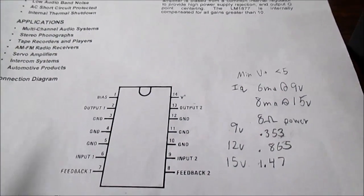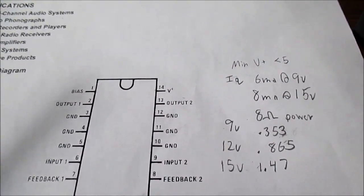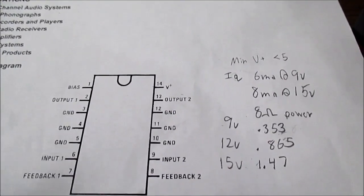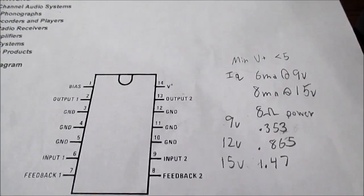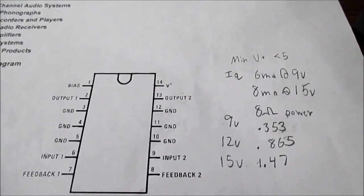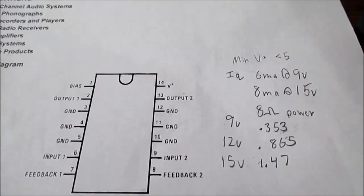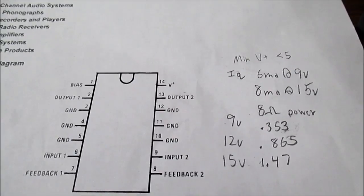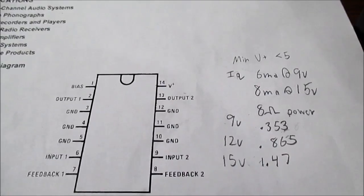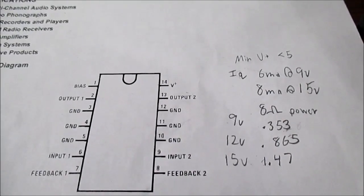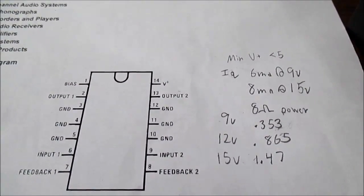That's the review and test of the LM1877. It's a decent chip. It sounds good. It's not a powerhouse or anything. It doesn't put strong power out at lower voltages. You can bridge it for more power. And if you want to use it with 9 volts, you could bridge it into an 8 ohm load and get probably close to one and a half watts or so. Thanks again for watching. We'll see you next time.